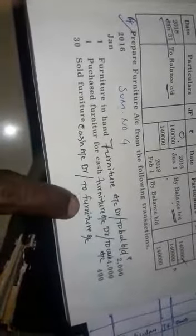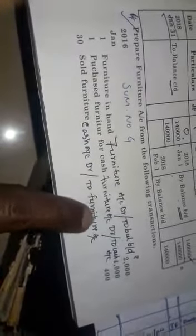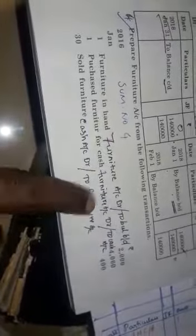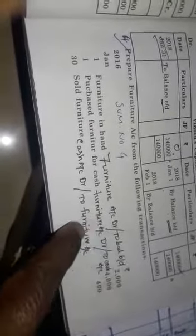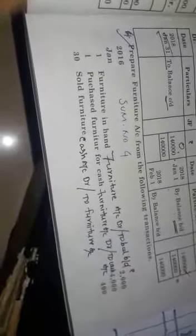That's why we have to write furniture account. So for sum number four, you have to write the ledger account on seeing these journal entries. Pass the journal entries in your notebook as well as the ledger account also in your homework notebook.